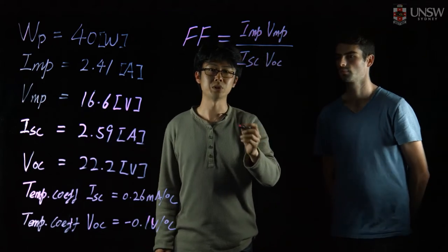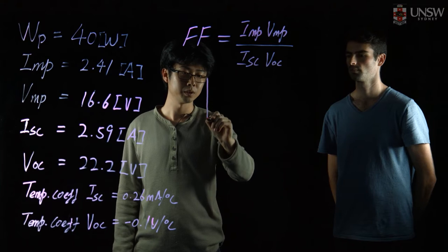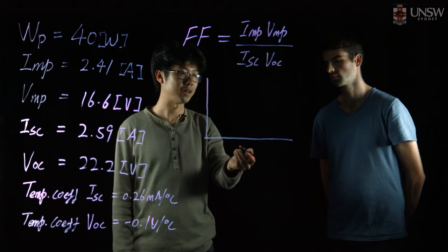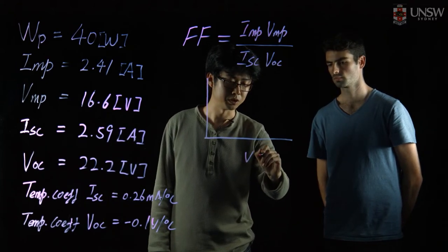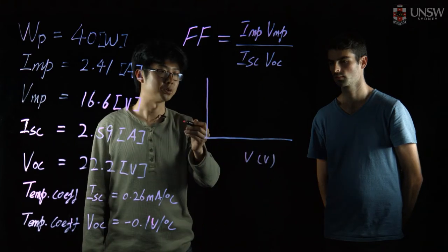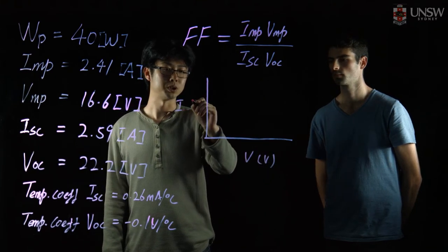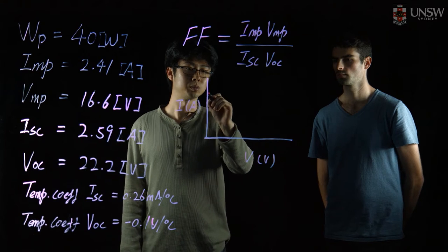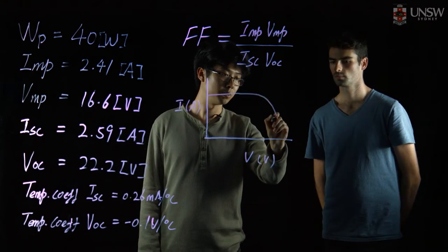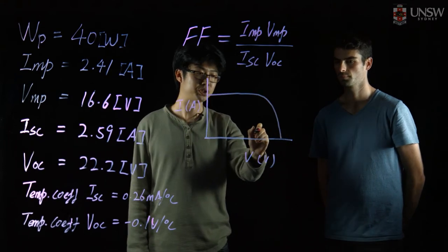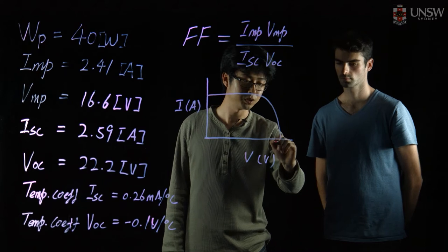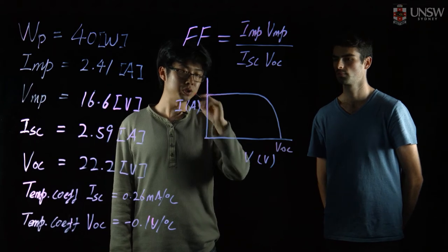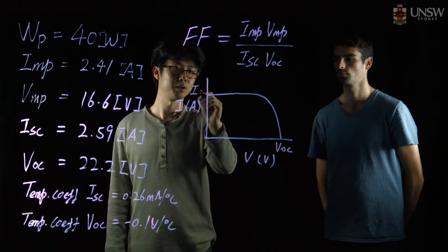To illustrate that, we can simply draw an IV curve, which on the x-axis we have the voltage measured in volts, and on the y-axis we have the current measured in amps. A typical IV curve of a module will look something like this, where at the very far end when it reaches zero current, that will be the open circuit voltage VOC. And when the voltage is equal to zero, that gives the short circuit current ISC.